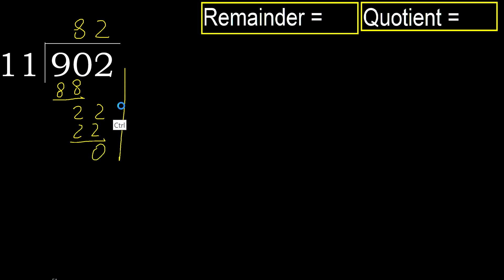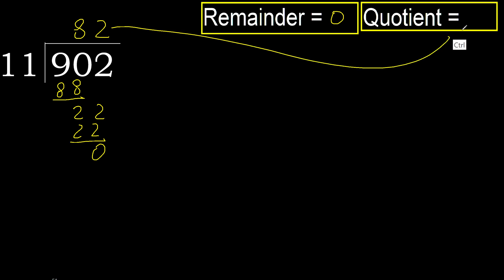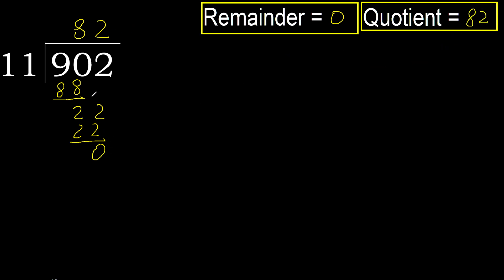Next, there is no more number, therefore finish. The remainder is 0, therefore 902 divided by 11 is 82.